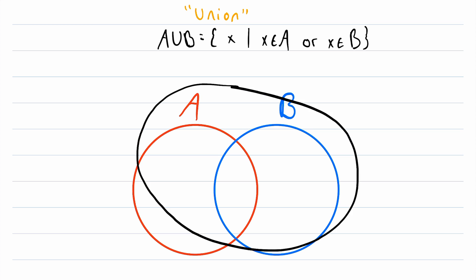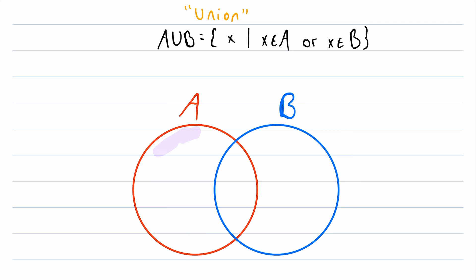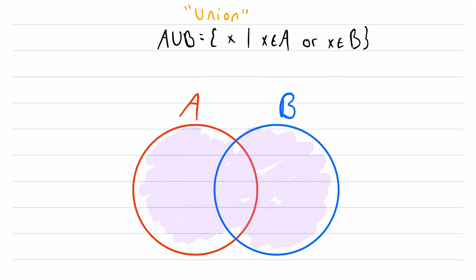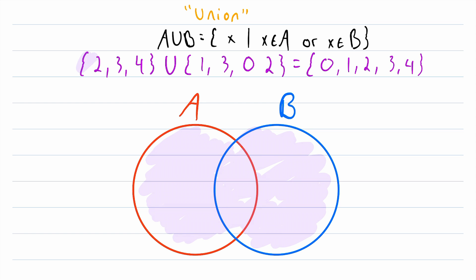In Venn diagram form, this is what it looks like — I am shading A union B. The union of two sets is the set containing all of the elements that are in either set. That is what set union looks like, so basically just put the two sets together. Let me jot down an actual example of set union in action. Let's move on to the next operation.